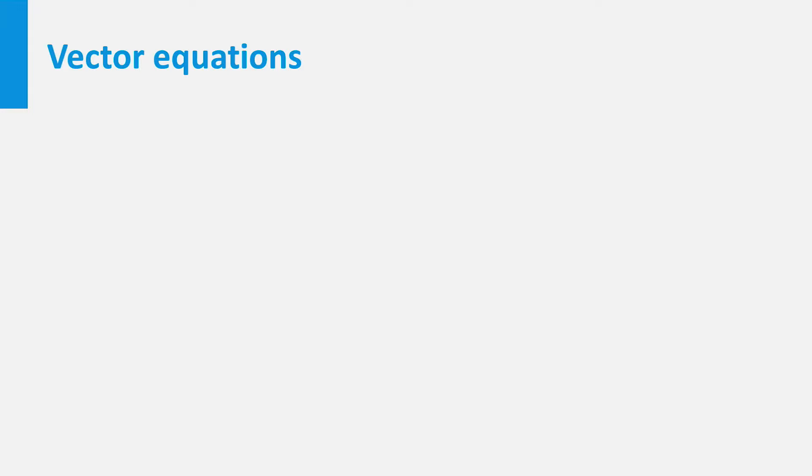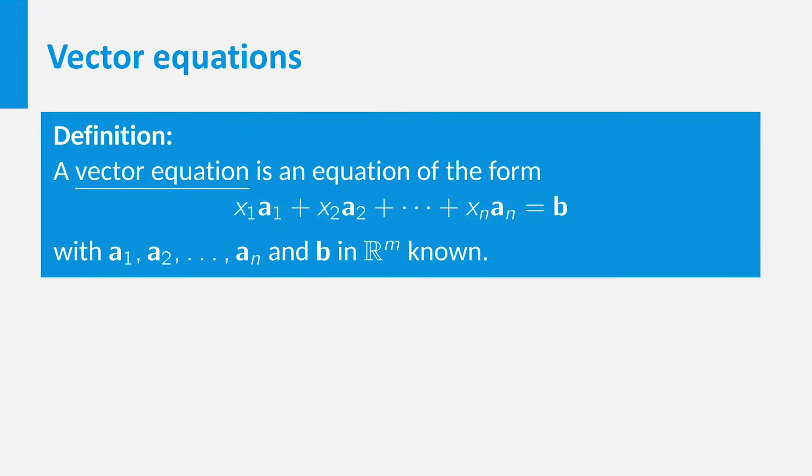Let me first tell you what a vector equation is. A vector equation is an equation of the form x1 times a1 plus x2 times a2 and so on until xn times an is equal to a vector b, where all vectors are from Rn.